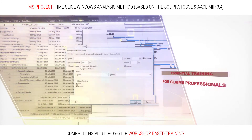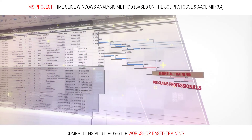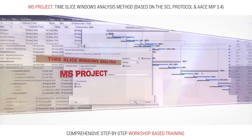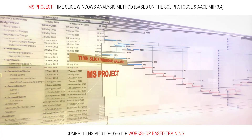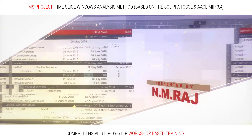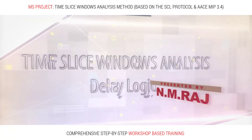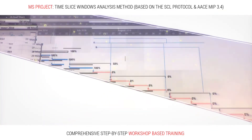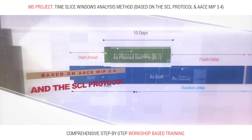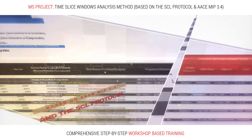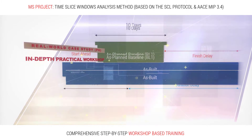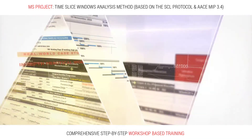First off, we'll discuss delay logic and the rationale associated with the Time Slice Windows Analysis Method. Then we'll discuss the 11 steps that have to be followed in order to carry out a Time Slice Delay Analysis. This is followed by a real-world, in-depth workshop demonstration of Time Slice Windows Analysis in Microsoft Project for a building project. I'll also provide you with a comprehensive Delay Analysis Table in MS Excel that can be used on your project. We'll also go into detail about pertinent case law, concurrent delays, and an alternative method which could be utilized to determine pertinent windows for a Time Slice Analysis.